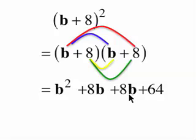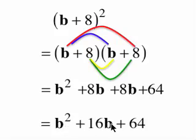We're going to add these two 8b's, giving us 16b's in the middle. So we get b squared plus 16b plus 64. And that's it. Have a good night.